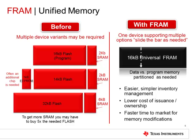A major benefit of using FRAM-based MCUs is the ability to dynamically shift the boundaries of code and data memory. FRAM can dynamically morph into code or data memory based on the user's requirements. When using Flash-based MCUs, the user is typically required to pre-select the amount of RAM and Flash needed for the application. In the case of FRAM, it can transition between static code, variable data, and constant data easily and dynamically.